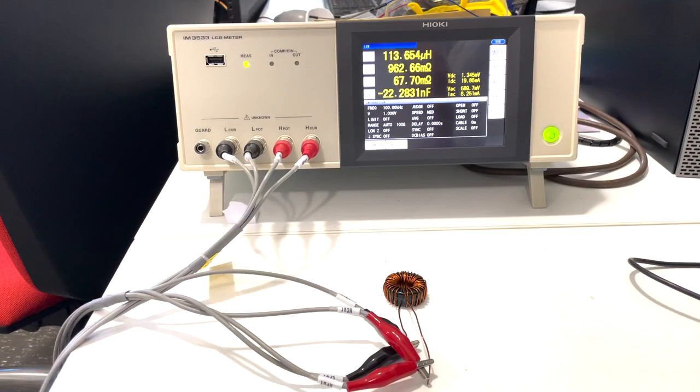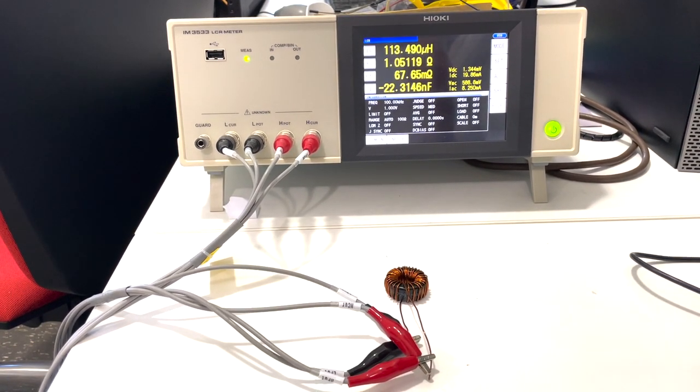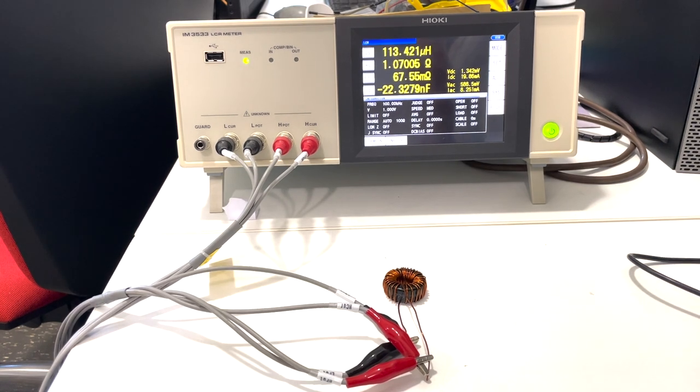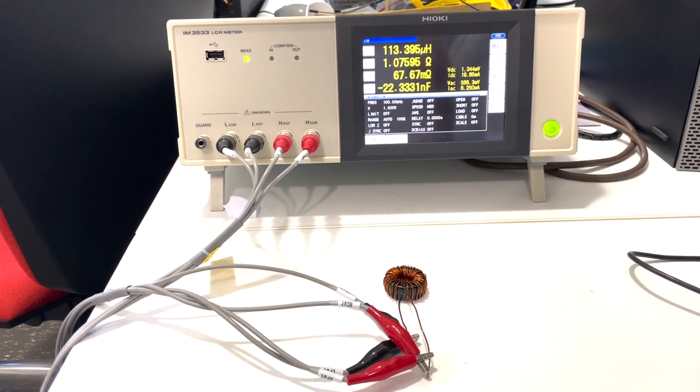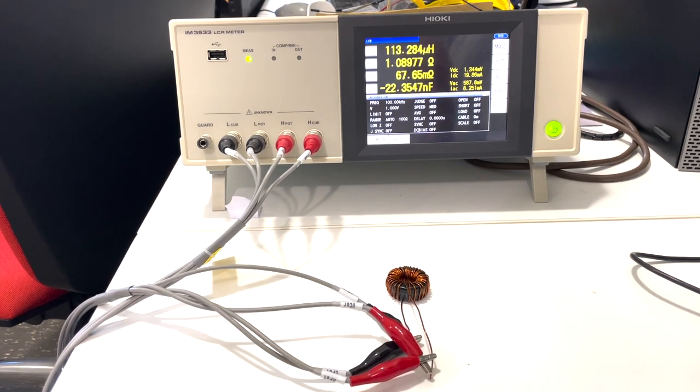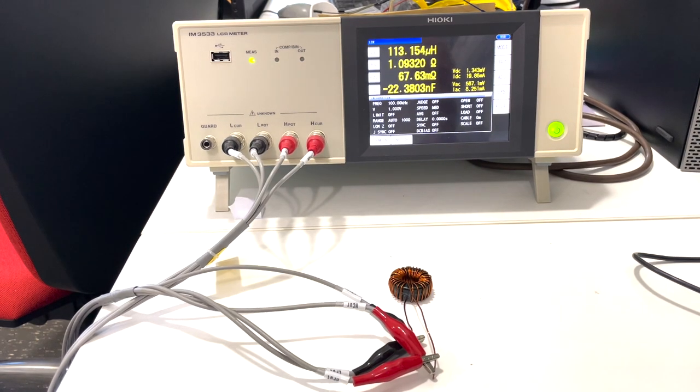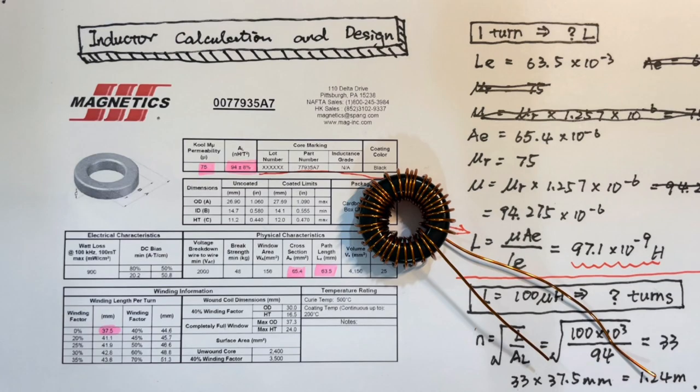Then we can put the inductor on LCR meter. We can see that when the frequency is at 100 kHz, we have 113 microhenry inductance and the ESR is 942 milliohms. That's all about inductor calculation and design.